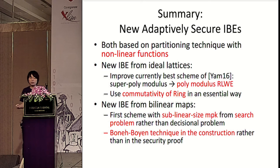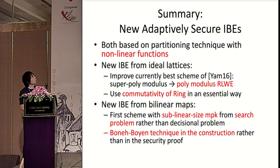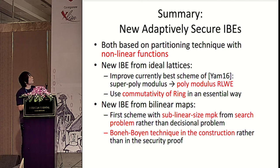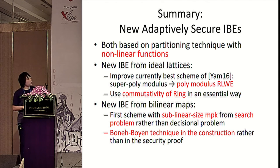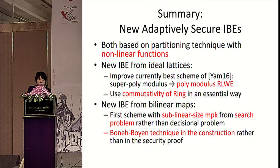In summary, we created two new adaptively secure IBE schemes. At a high level, both are based on the partitioning technique where we divide the identity space using a nonlinear function. The lattice-based IBE is built over ideal lattices using a polynomial modulus ring LWE assumption. The bilinear map IBE is the first scheme with sublinear size master public key from search problems. Thank you.